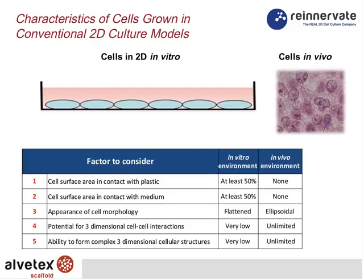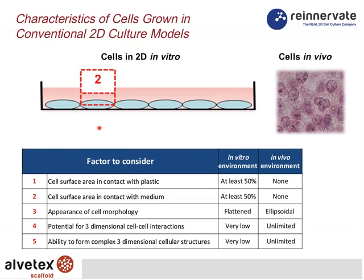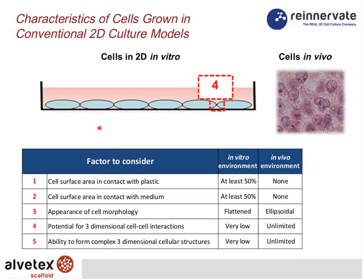Looking more closely at the 2D environment: the classic conventional culture system grows cells in monolayers, cells are almost 50% exposed to the medium above, they are flattened, and the opportunity for cell-to-cell interactions is minimized to their very edges. There is very little opportunity to create three-dimensional complex structures as you would find in vivo.